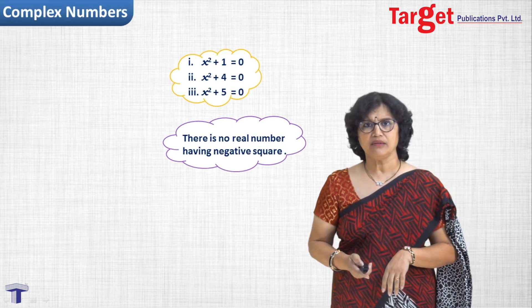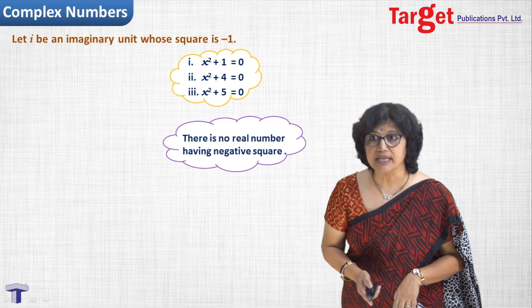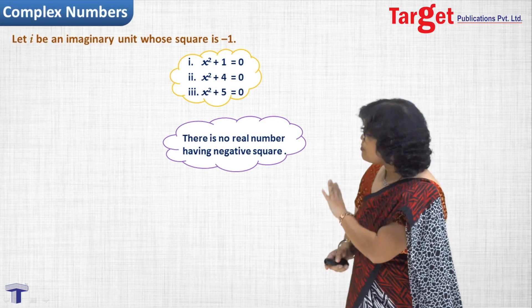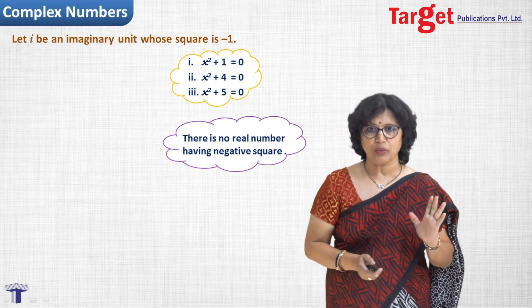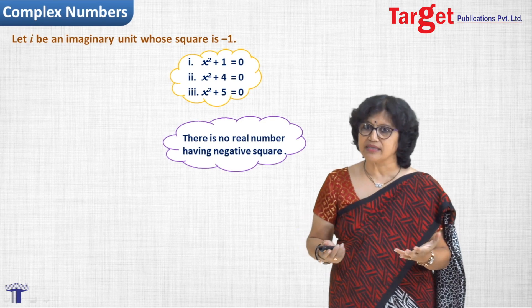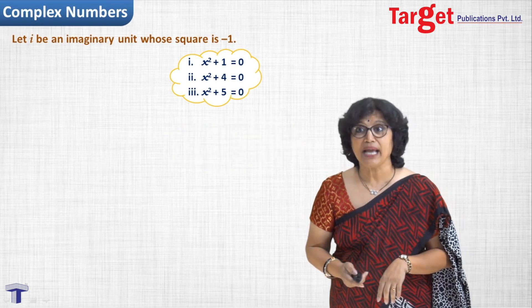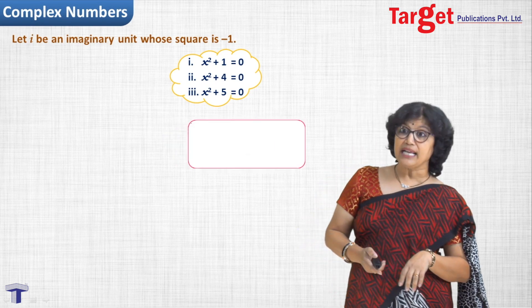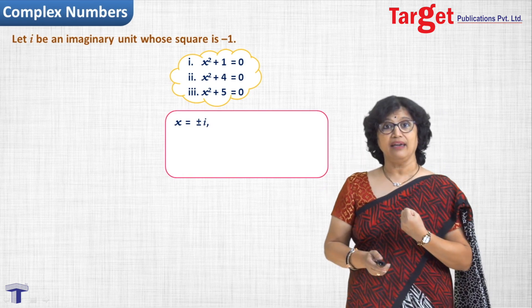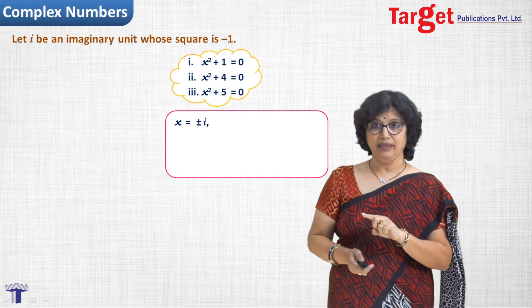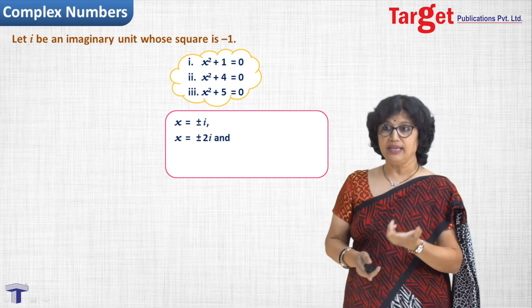Then how do we proceed? We do not run away from the situation. What we say is that there is some imaginary unit whose square is minus 1, and by assuming this, can we proceed further? And to our surprise, we realize that there can be x equal to plus or minus i, whose square would be minus 1, and hence that would satisfy the first equation.